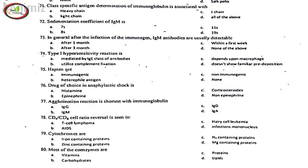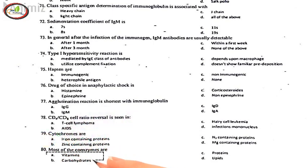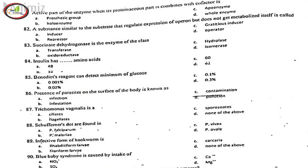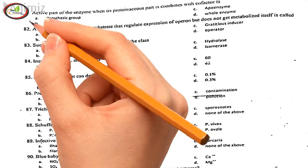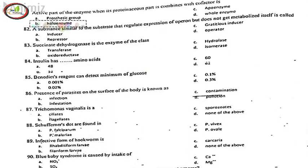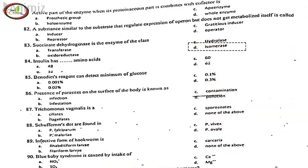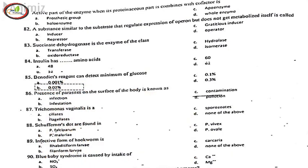79. Cytochromes are, A. iron-containing proteins. 80. Most of the coenzymes are, A. vitamins. 81. Active part of enzyme when its protein part combines with cofactor is, B. holoenzyme. 82. A substance similar to the substrate that regulates expression of operon but does not get metabolized itself is called, C. gratuitous inducer. 83. Succinate dehydrogenase is the enzyme of the class, D. isomerase. 84. Insulin has, B. 51 amino acids. 85. Benedict's reagent can detect minimum of glucose, B. 0.02%.